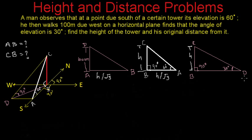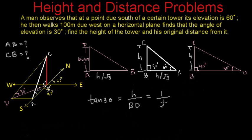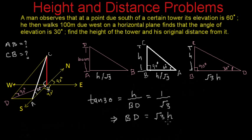Now looking at triangle DBC, this is also a right angle triangle with angle D equal to 30 degrees and angle B equal to 90 degrees. So tan 30 equals H divided by BD, which equals 1 over root 3. From here we get BD equals root 3 times H. So BD, this distance in the base triangle, is equal to root 3 times H.